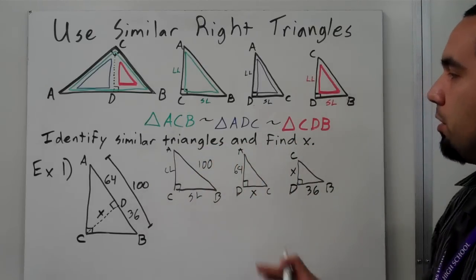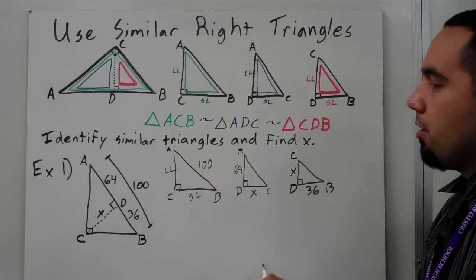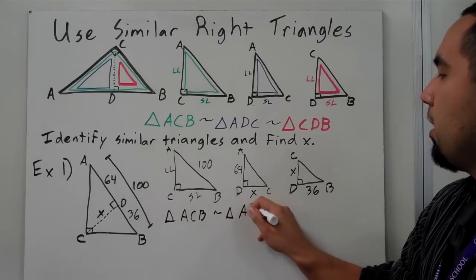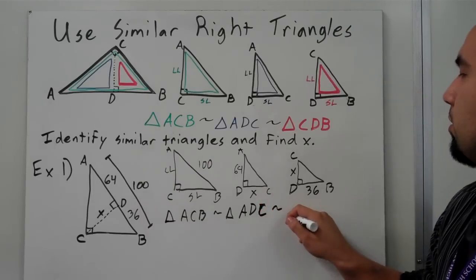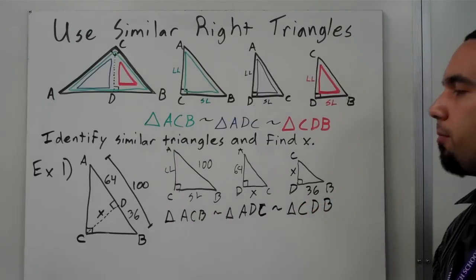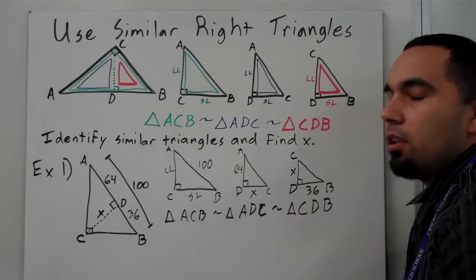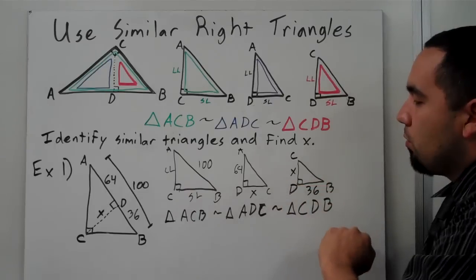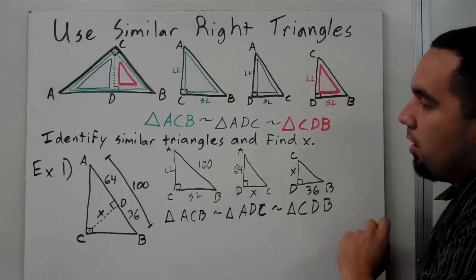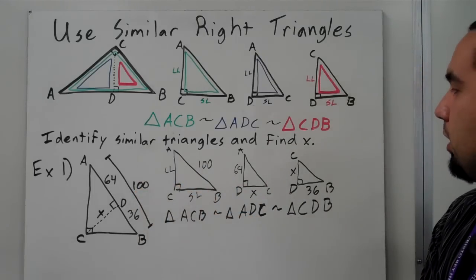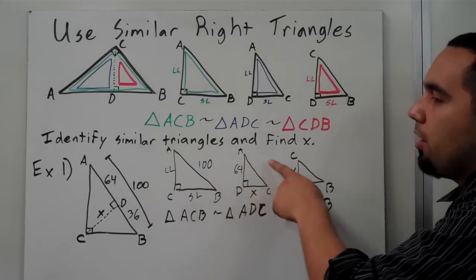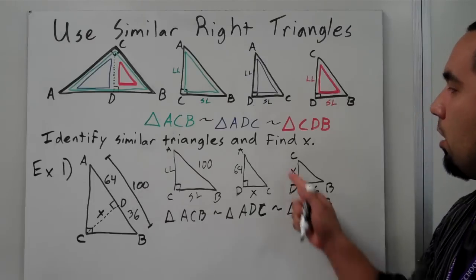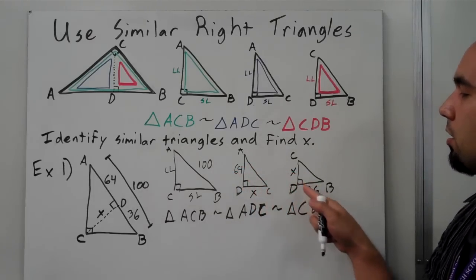Now that I have them all lined up perfectly, I can write my similarity statement. Triangle ACB is similar to triangle ADC, which is similar to triangle CDB. But I also have to find X. Finding X is just like we did in Chapter 6 — we're going to use proportions. I need to look for two sides where I only use X once. I have both my long leg and my short leg here, and I can use the geometric mean. I have 64 over X and X over 36.